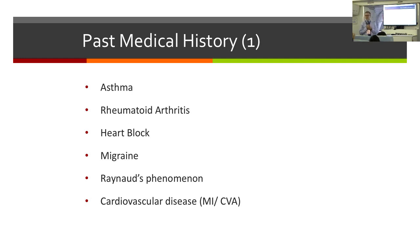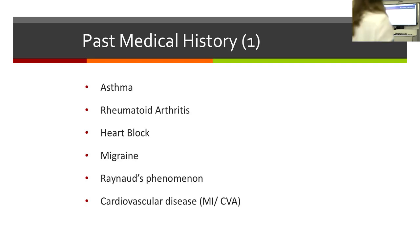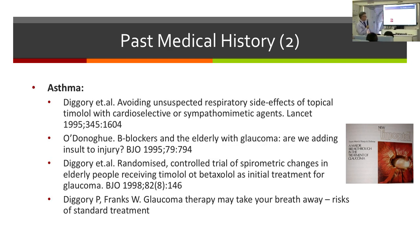Several factors in the past medical history need to be considered. Patients with asthma may preclude us from using beta blockers, which can exacerbate chest problems. Rheumatoid arthritis may make instilling eye drops difficult. Heart block might stop us using beta blockers. A history of migraine or Raynaud's might increase the risk of normal tension glaucoma. There are many papers on the respiratory side effects of topical beta blockers dating back to the 1970s and 80s when they were first used.